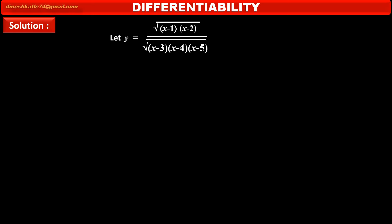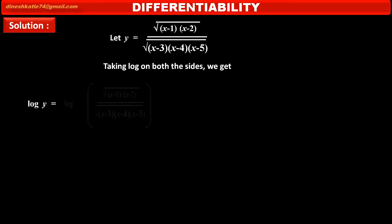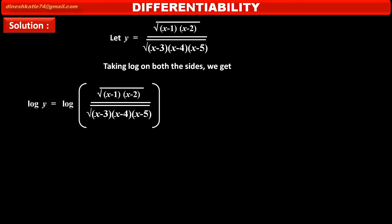Since the given function is complicated, we can make it easy by using log. Taking log on both sides, we get on the left hand side: log y, equal to on the right hand side: log of the given function.